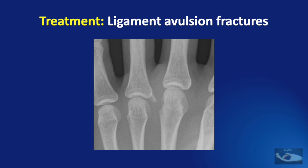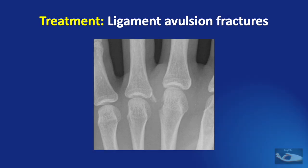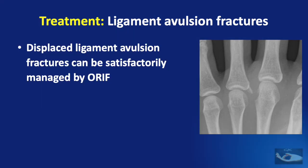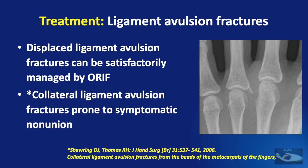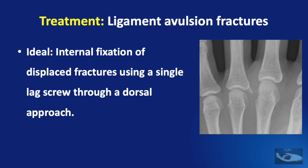Ligament avulsion fractures refer to fractures of the bone attached to the strong collateral ligaments. Since these fractures are usually displaced, they can be managed by open reduction and internal fixation. However, due to the continued pull of the collateral ligament, they are prone to symptomatic nonunion. The ideal management is internal fixation using a single lag screw through a dorsal approach.